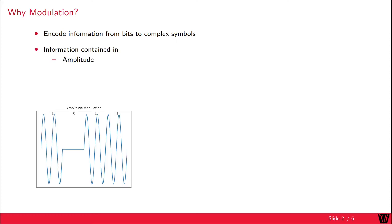Information can be carried by different properties of a signal. We could use, for example, the amplitude of a signal to encode the information. If there is a signal, we transmit a 1; if there is no signal, we transmit a 0.